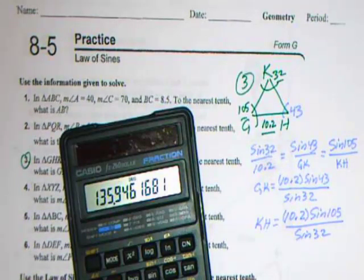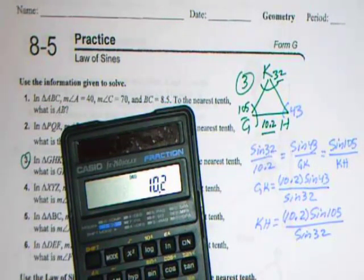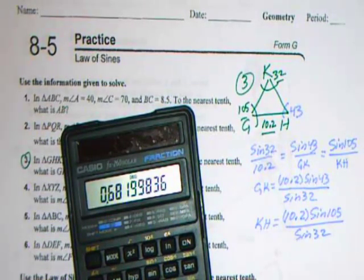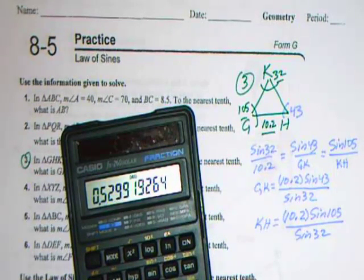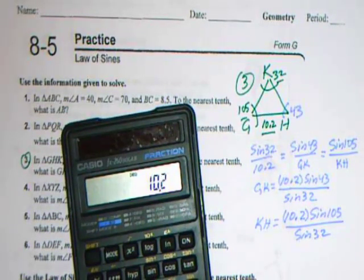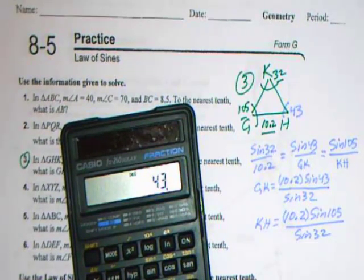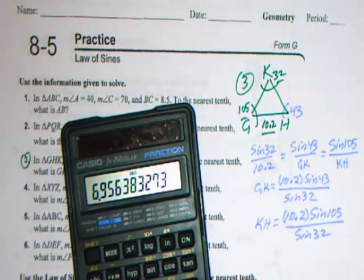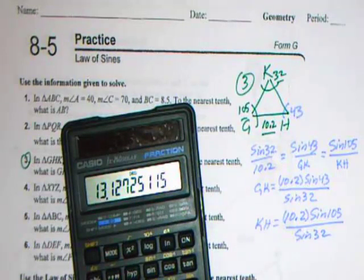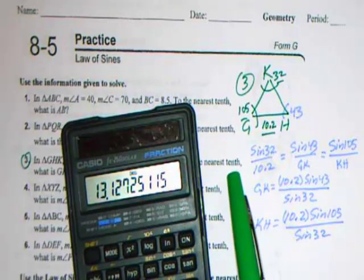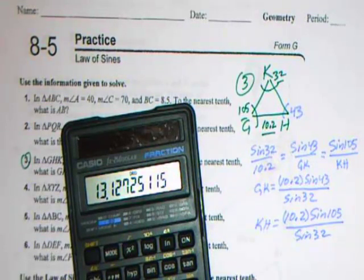Punch that in the calculator and see what we get. For the GK, 10.2 times sine of 43. I don't think I hit my equals. Let's do this over again. 10.2 times the sine of 43 divided by sine of 32 equals 13.127. They want this rounded to the nearest tenth, so 13.1 for GK.